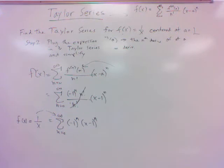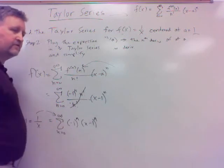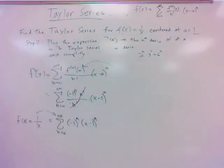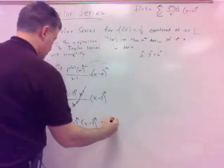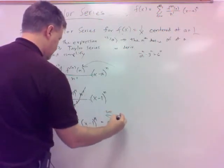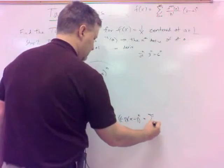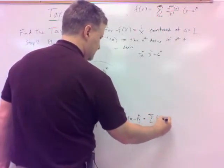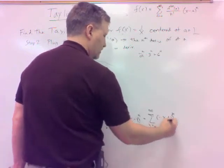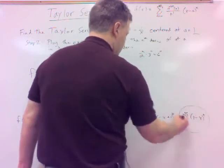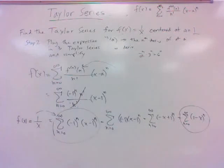One other quick little note here: since they're both to the nth power — like if you have 2 to the n times 3 to the n, you can say that's 6 to the n, you can go ahead and multiply those. Since they're both to the nth power, you can multiply those together. So it would be negative 1 times x minus 1 to the nth power, which makes it become minus x plus 1 to the nth, or 1 minus x to the nth.